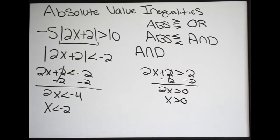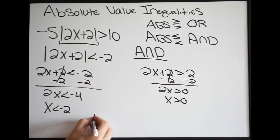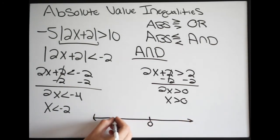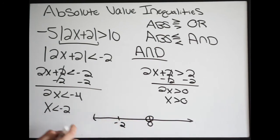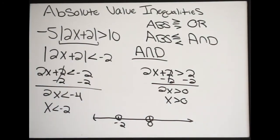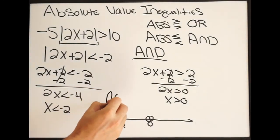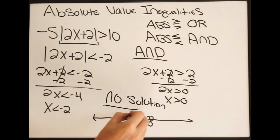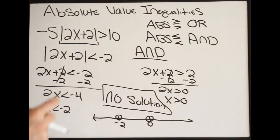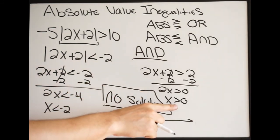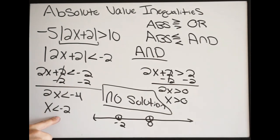Let's put this on a number line. Remember, it is AND — a conjunction — meaning it has to satisfy both conditions. Here is 0 and here is negative 2. On 0, it's going to be an open circle; on negative 2, open circle as well. Think about that statement — how can x be greater than 0 and also be less than negative 2? That's not possible. So in this case, this is going to be no solution. It is a conjunction, so it has to be greater than 0 and also less than negative 2 — that's not possible, so again it's no solution.